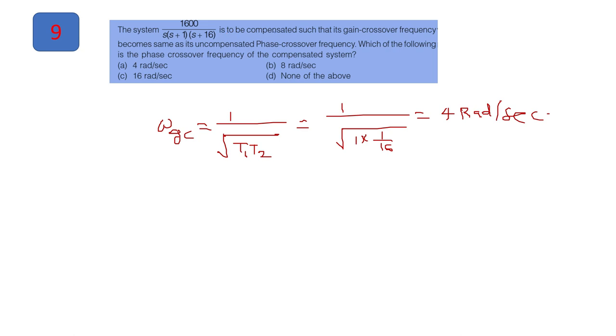In the next question, the system is given that is to be compensated such that its gain crossover frequency becomes same as its uncompensated phase crossover frequency. Which of the following is the phase crossover frequency? So we have to determine the phase crossover frequency. Now for this given system, it is in the standard form which is s. You can write it as a 1 plus s t1. You can write it as t1 plus 1. Then this is s t2 plus 1. So here we obtain omega gc gain crossover. That direct formula is 1 upon under root t1 plus t2 in this kind of transfer function. And value of t1 and t2 you can obtain by comparing coefficient of s is 1. Here coefficient of s will be 1 by 16. So you will get the value of 4 radian per second.